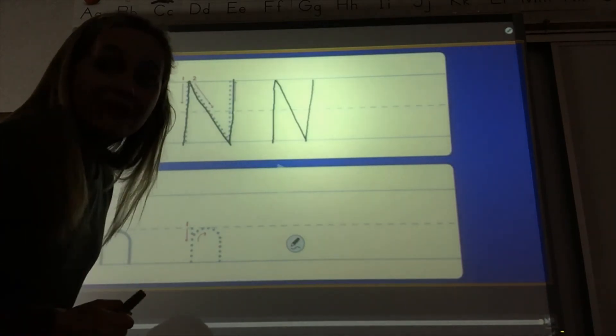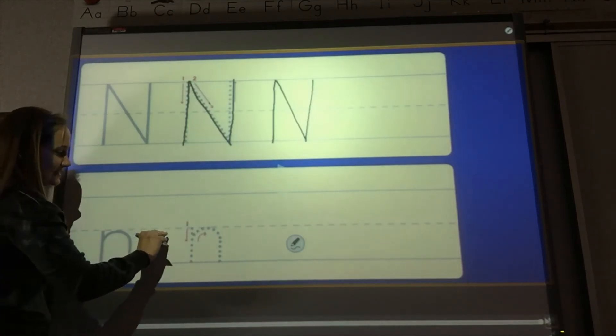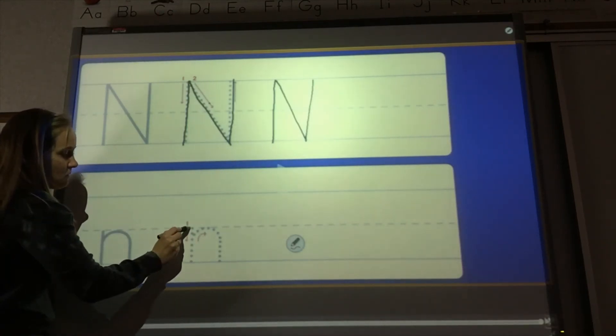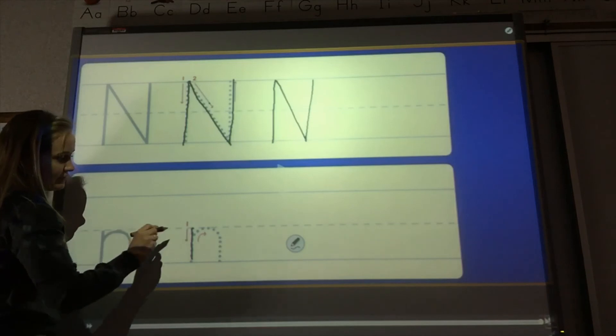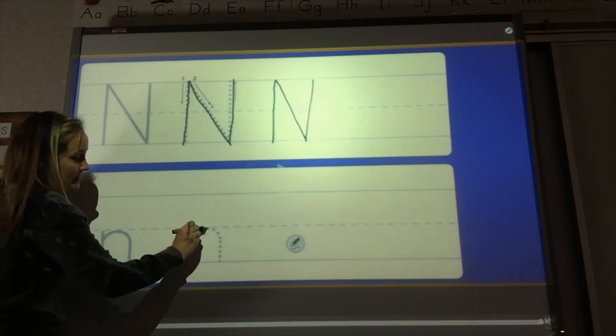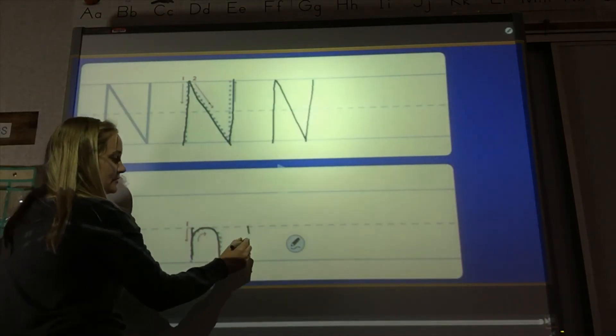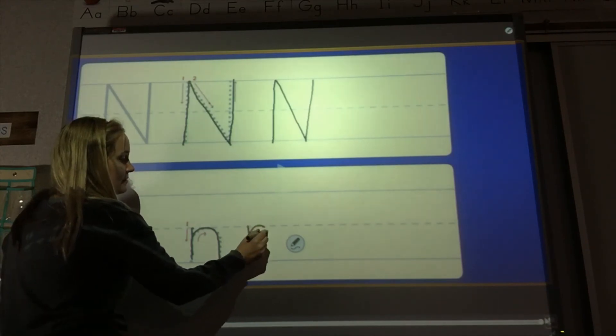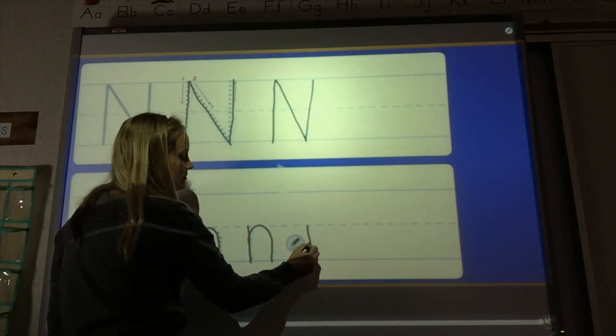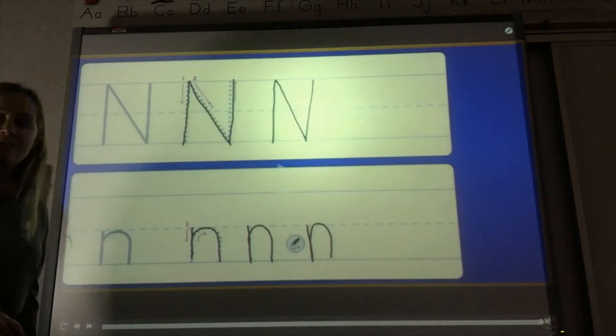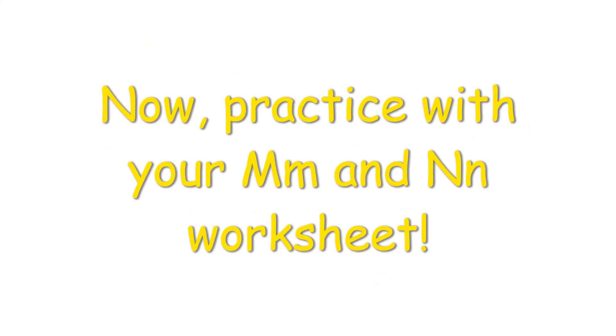Let's practice the lowercase n. Remember, lowercase letters are short. They stay at that dotted line usually. So let's start with step one. Straight line down from the dotted line and then we curve it back. A little mountain, like a little hill. Ready? Straight line down, a little curve. Straight line down, a little curve. Keep practicing this at home. Now practice with your M N N worksheet.